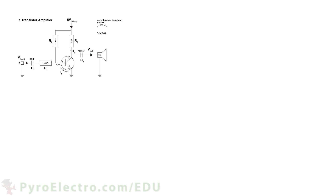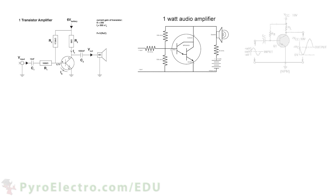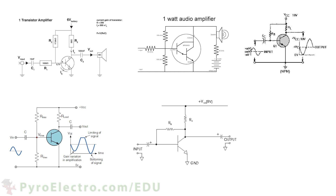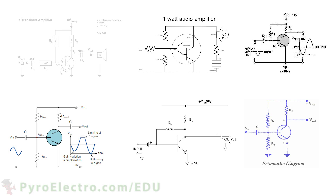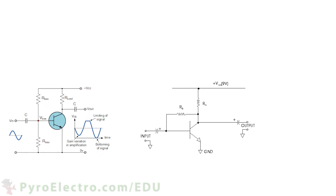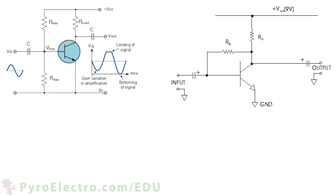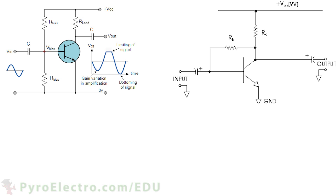If you search the internet for transistor amplifier circuits, you'll come up with tons of different circuits, but the classic styles of transistor amplifier circuits look like these two circuits. The one on the left uses more resistors and therefore has more operational control, while the circuit on the right uses the bare minimum of components necessary and therefore lacks flexibility. Since in this course we're just trying to introduce concepts, we'll take a deeper look at the second amplifier circuit.